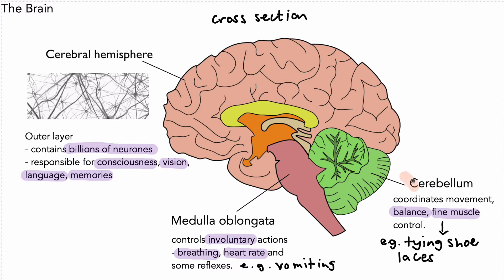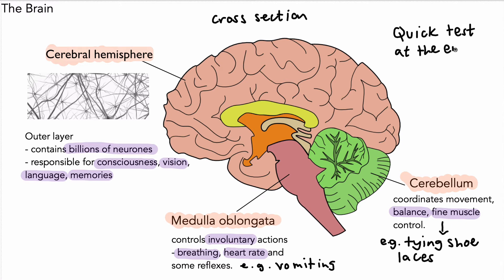So we have the cerebellum, the medulla oblongata, and the cerebral hemispheres — there are two of those; we've just shown one — and these are their functions. We can do a quick test at the end of the video to see if you can remember these, so it might be worth pausing here and looking over those for a minute before moving on.